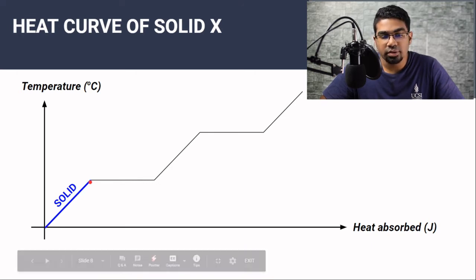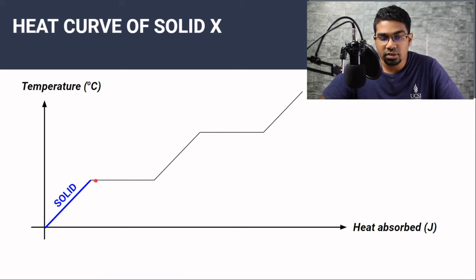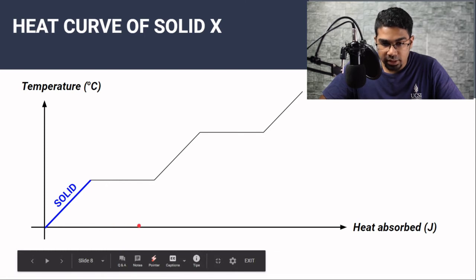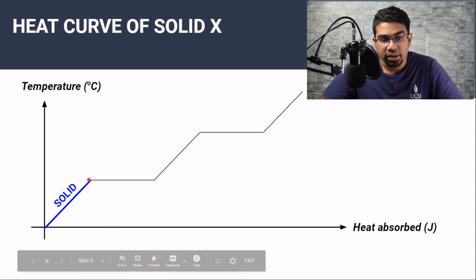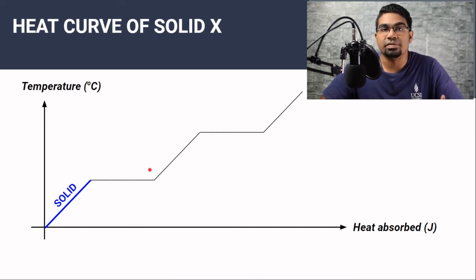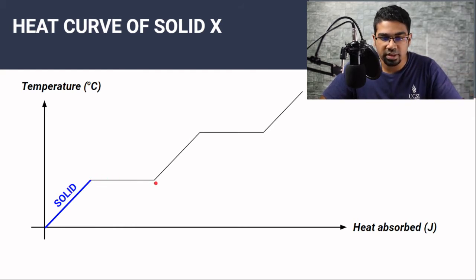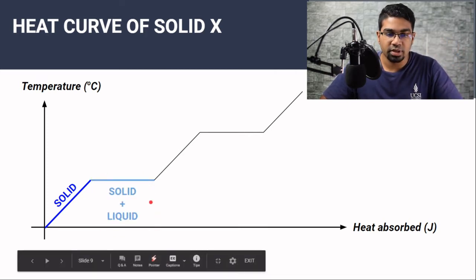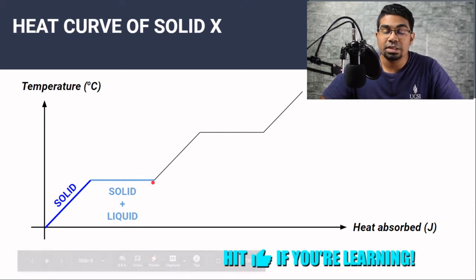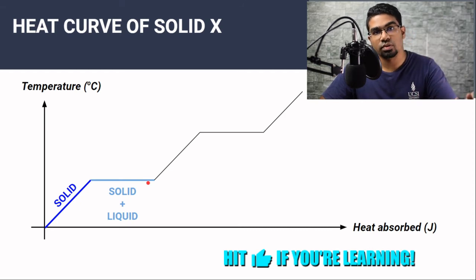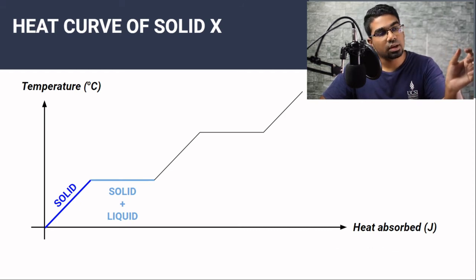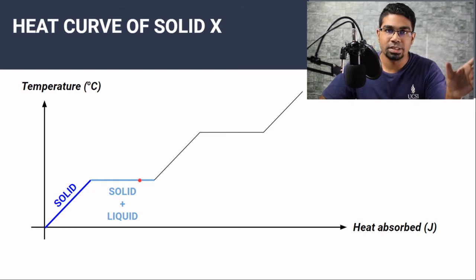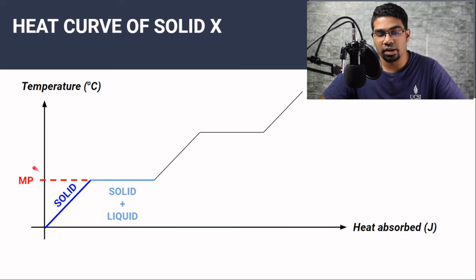The temperature will increase until it reaches a point where the temperature no longer increases and it stays constant. Notice that we continue to supply heat — heat is still being supplied — but the temperature doesn't change. This is when there is a change in phase of matter going on. Solid starts to melt; there'll be a mixture of solid and liquid because solid is just beginning to change to liquid. The temperature remains constant because heat energy is being used to overcome and break the bonds between the solid particles in order for them to move far enough apart to become liquid.